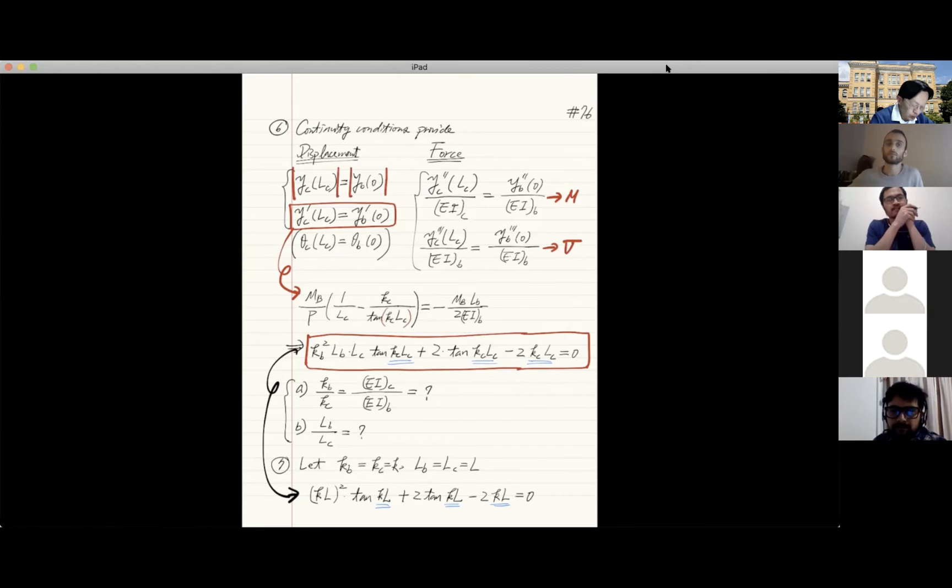That means no matter what component you're looking at, the absolute entity of this. Because on the two-dimensional plane, the displacement may have two different components x and y. So if I take the absolute value for both of them, you agree that the absolute value for the displacement at the point when they join together should be the same, right?